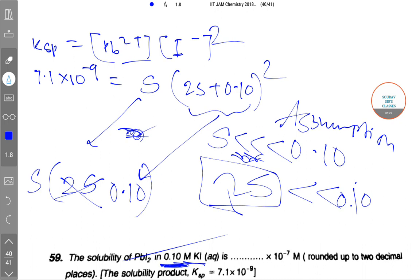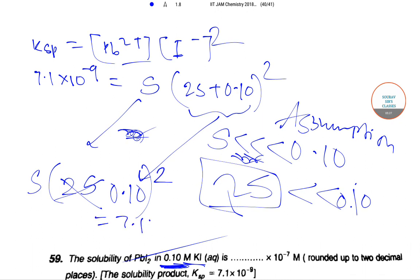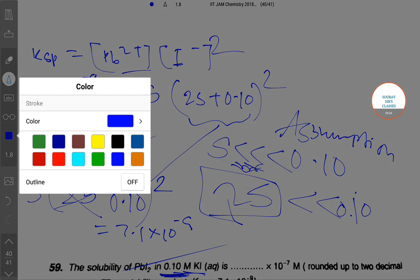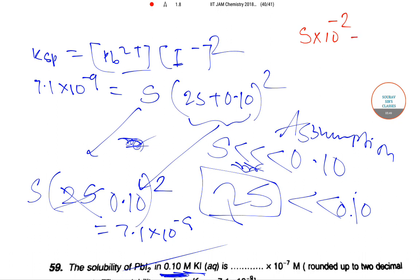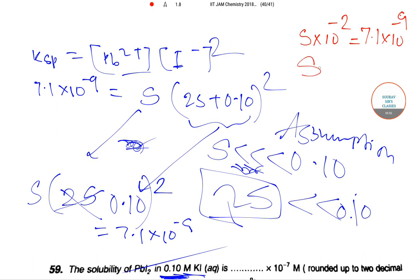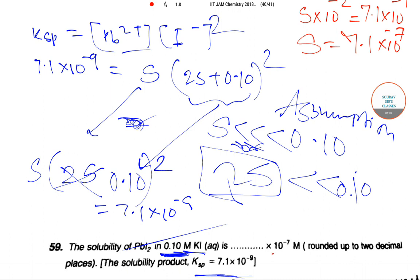Now S × (0.10)^2 = 7.1 × 10^-9. This is 10^-1 squared, or 10^-2, so S × 10^-2 = 7.1 × 10^-9. Hence S will be equal to 7.1 × 10^-9 divided by 10^-2, which equals 7.1 × 10^-7 molar. So the solubility will be 7.1 × 10^-7. The answer is 7.1. Thank you.